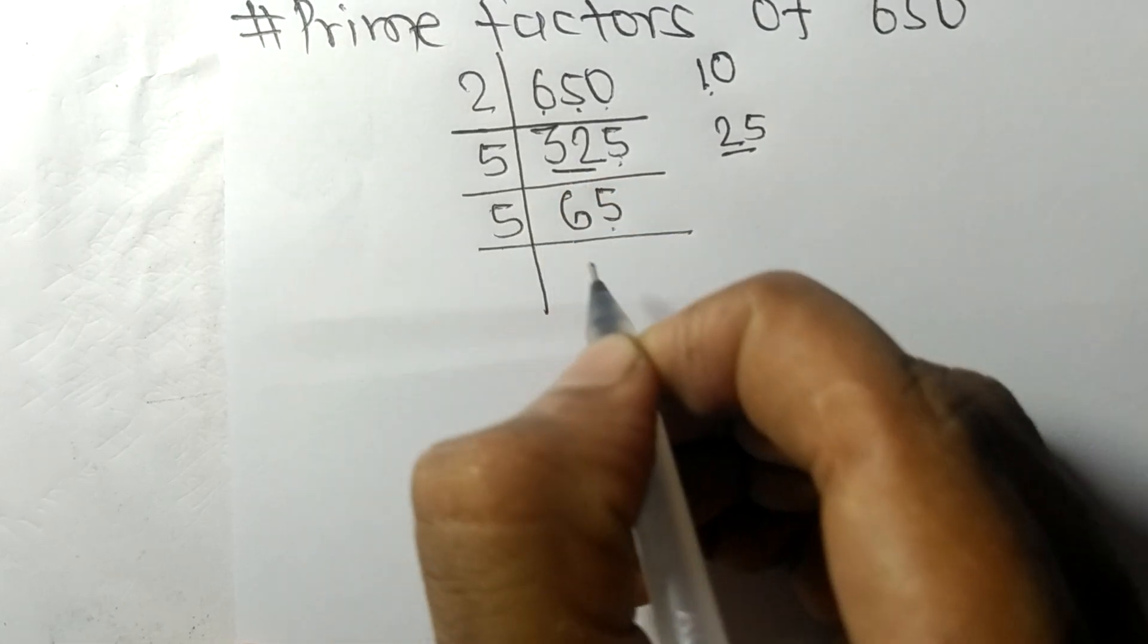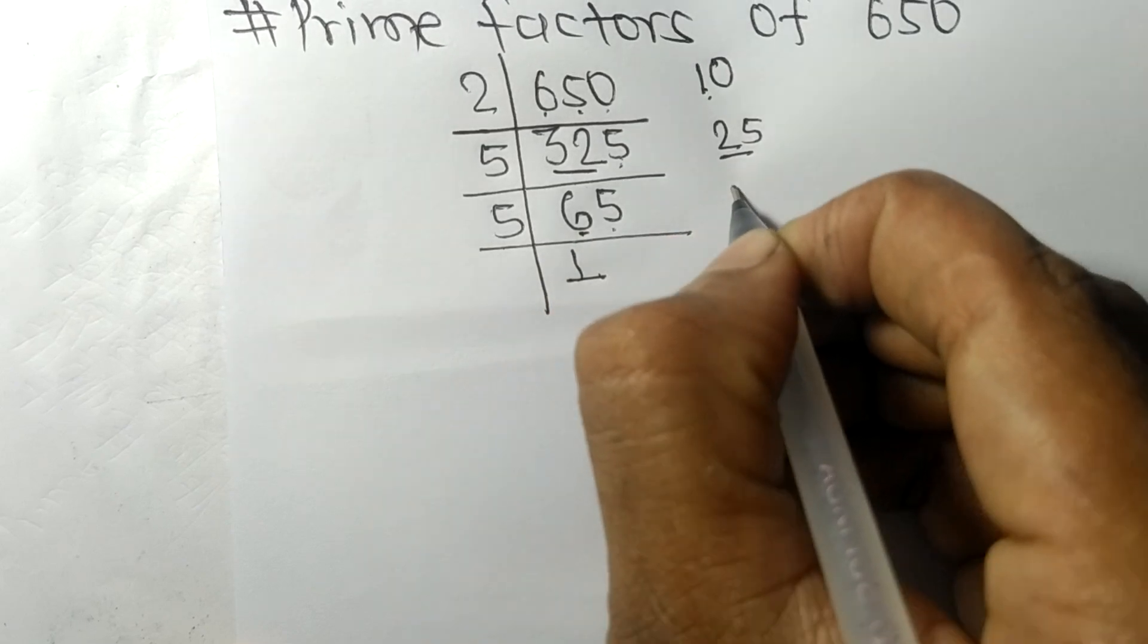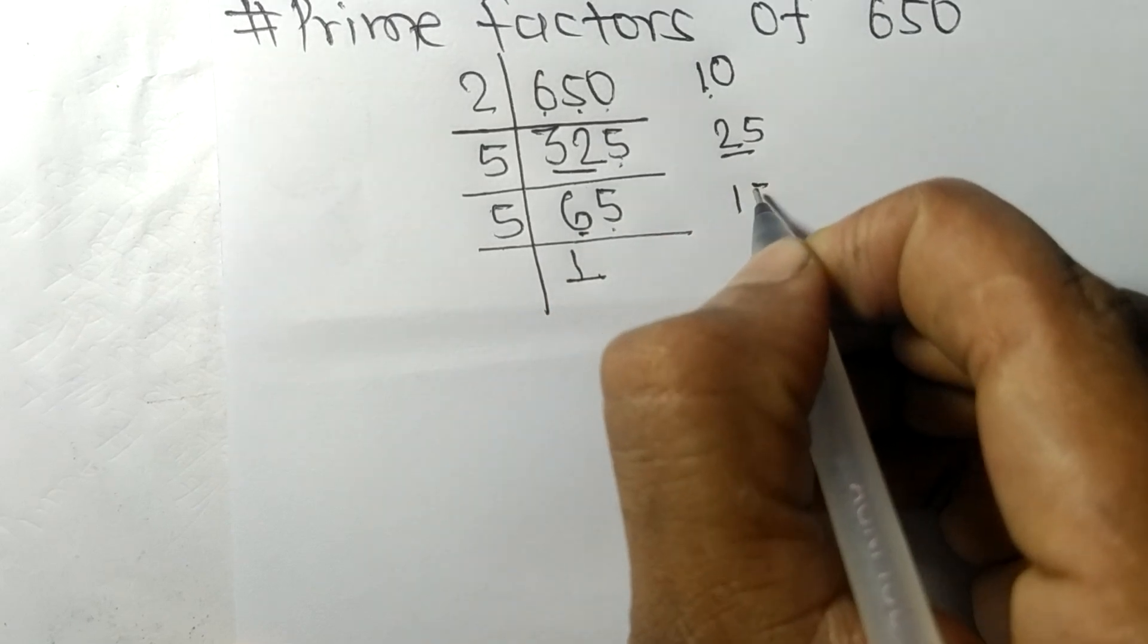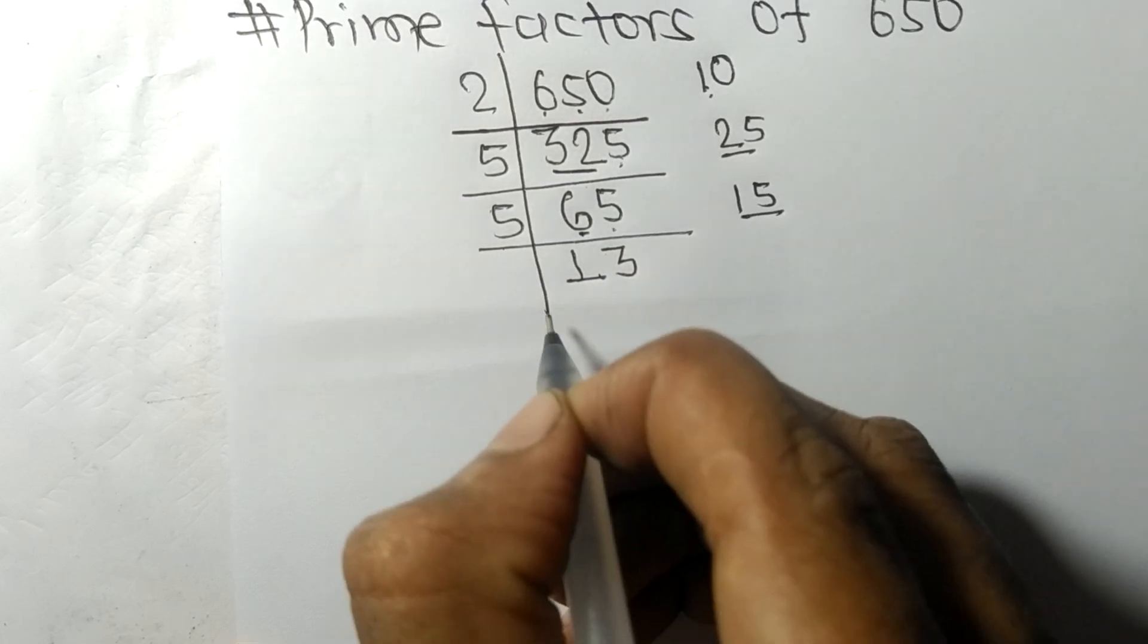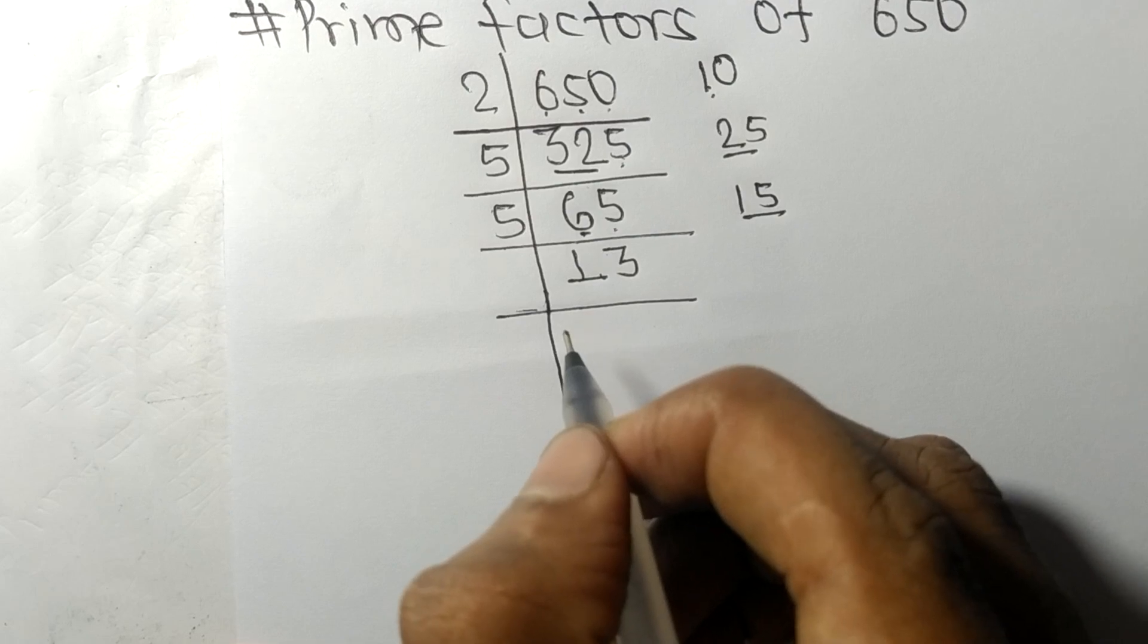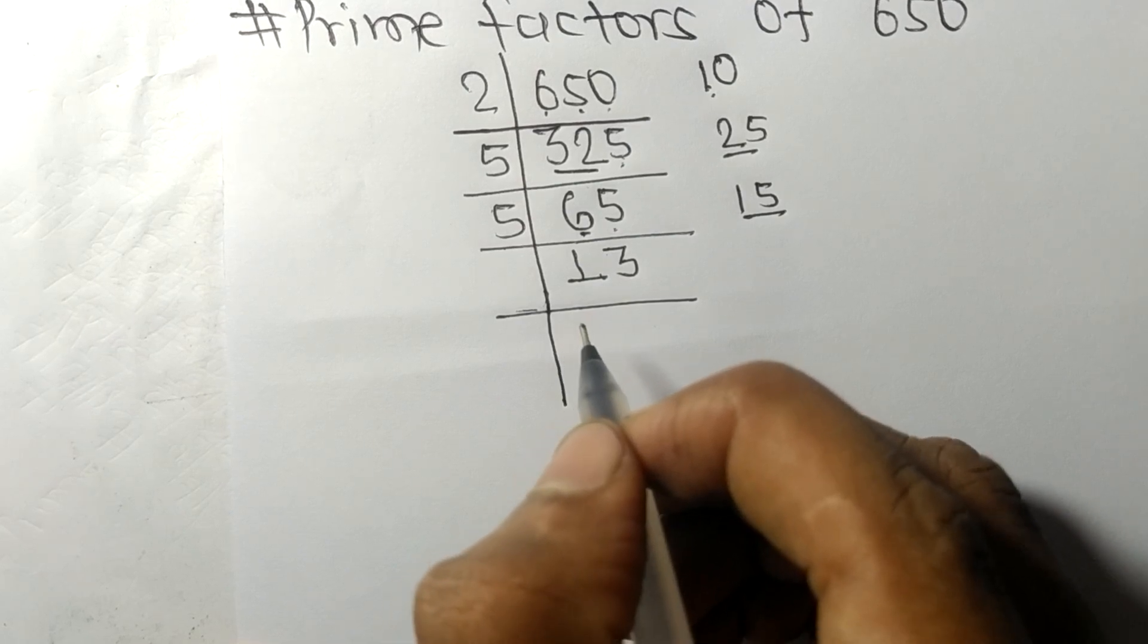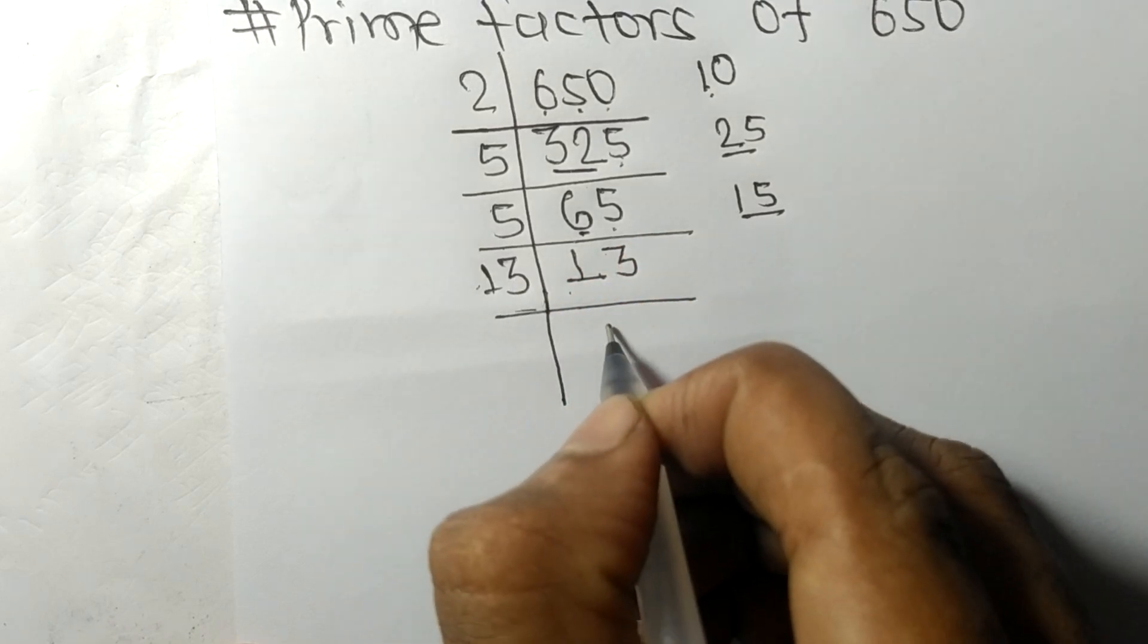5 times 1 equals 5, remainder 1, and this 5. 15 - 5 times 3 equals 15. Now we got 13, which is a prime number, so it's divisible by 13 itself, and we get 1.